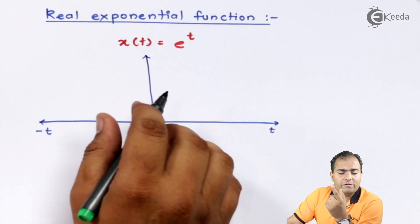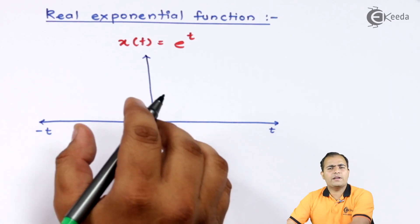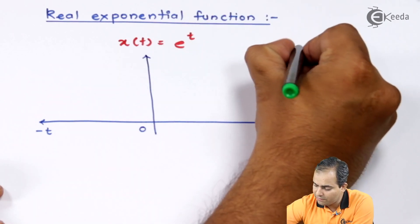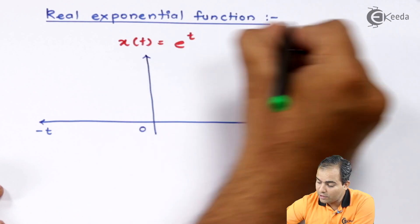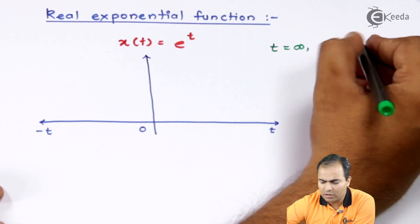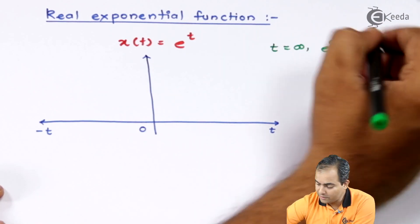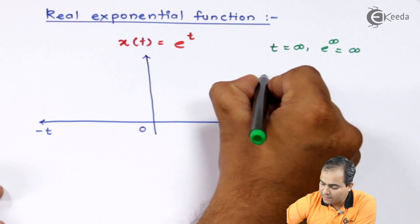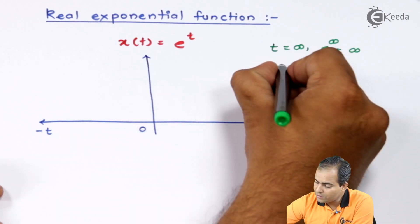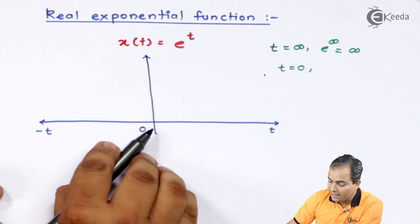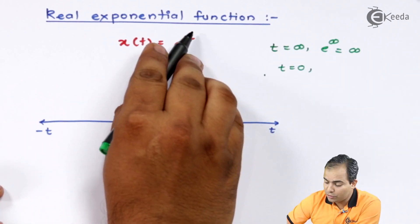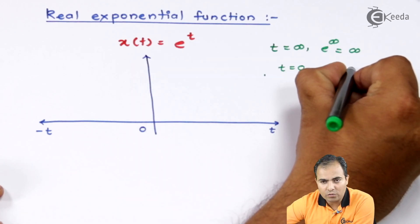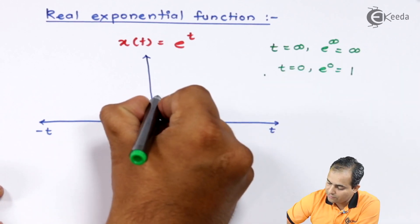We will substitute the values of t one by one. For the rightmost value, t equals to infinity: e to the power infinity is always infinity, which means at the rightmost position the amplitude is also infinite. Similarly, for t equals to 0, e to the power 0 is 1, so this is the position of amplitude 1.